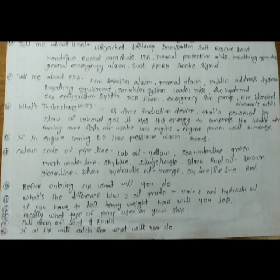Next question, color code of pipelines. Friends, fuel oil is yellow, seawater line is green, freshwater line is sky blue, sludge and waste is black, fuel oil is brown, steam line is silver, hydraulic oil is orange, and CO2 and fire line is red.